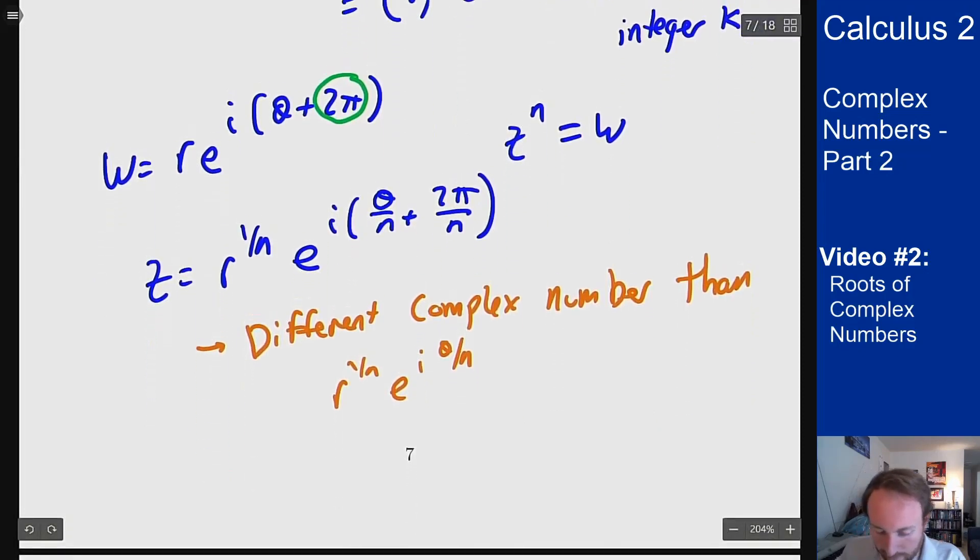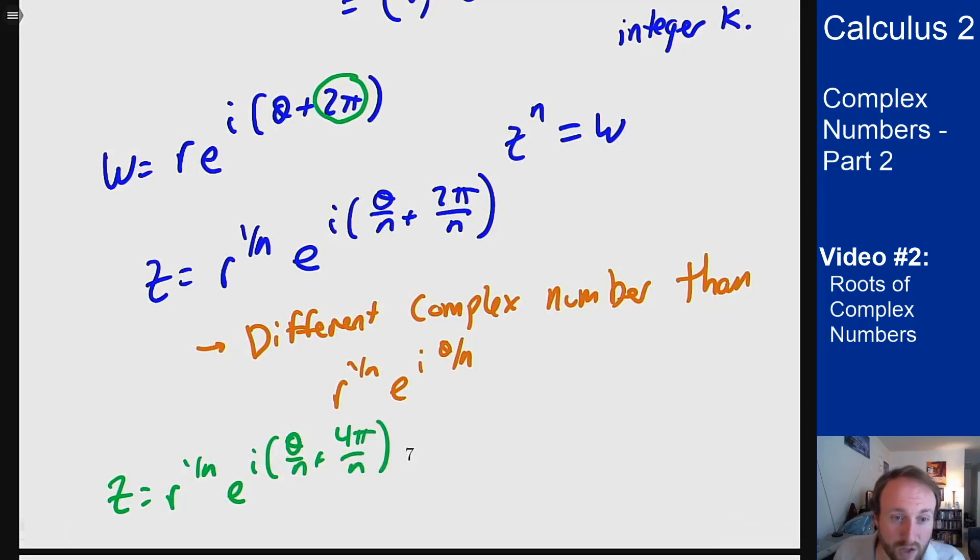So for instance I do the same with a 4 and I would get z equals r to the 1 over n e to the i theta over n plus 4 pi over n. If n is 2 here well then in that case 4 pi over 2 is 2 pi, it's actually the same complex number that I started from here, but if n is bigger than 2 this is another different solution. And so I'll get a whole bunch of different answers this way. I will actually get n different answers this way and that's why it works out so nicely, we have an nth degree equation and n solutions to it.